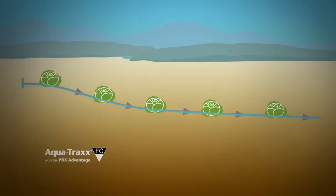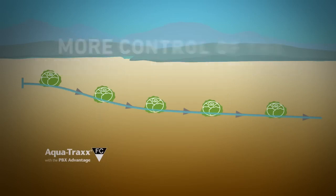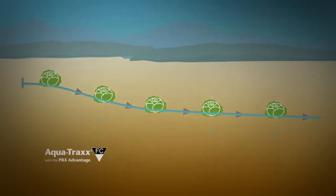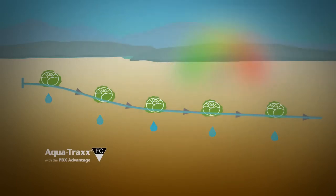In addition to uniformity, AquaTrax FC gives you more control of the overall irrigation application rate. You control how much water your plants receive by increasing or decreasing the operating pressure while still maintaining uniform delivery. This is in contrast to pressure compensating devices, where flexibility is sacrificed for uniformity.